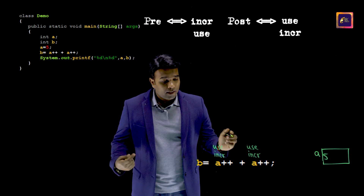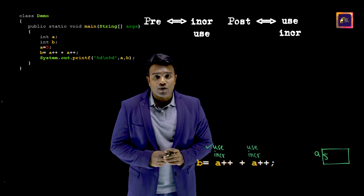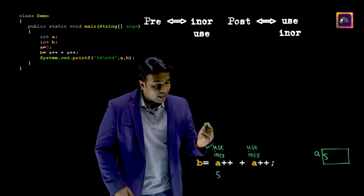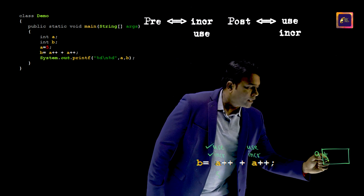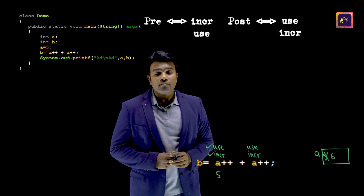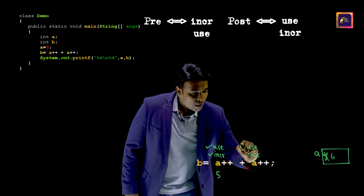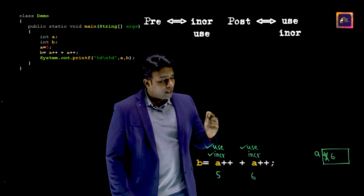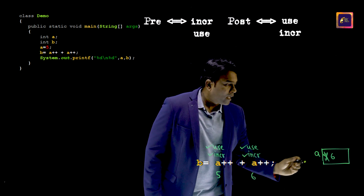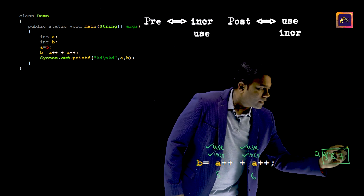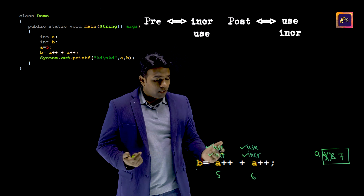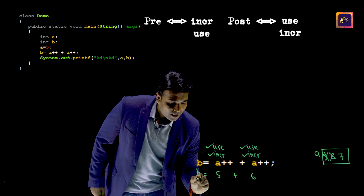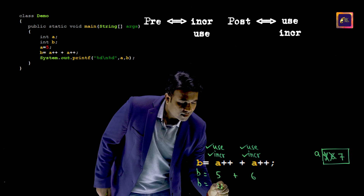Let's apply. First I have to use, so I am going to use that value 5 and then I have to increment — so I will increment it. Next, I have to use, so I am going to use that value 6 and then I have to increment, and this becomes 7. So the value that gets into B happens to be 5 plus 6, that is 11.